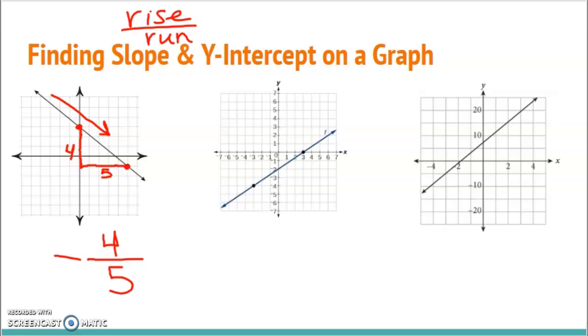If I want to determine what the y-intercept is, that's where it crosses the y-axis, and the y-axis is the one that goes straight up and down. Looking at my graph, notice it crosses right here at one, two, three. So my y-intercept would be (0, 3).